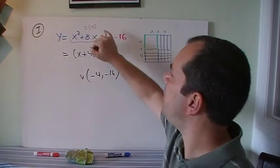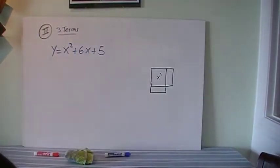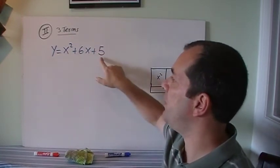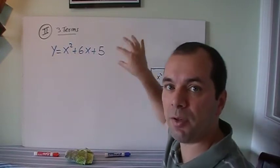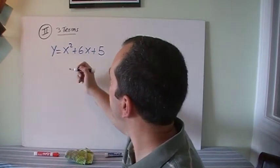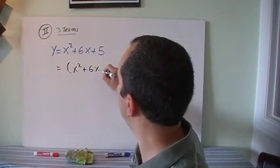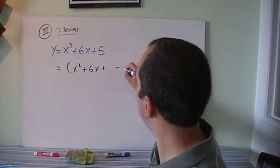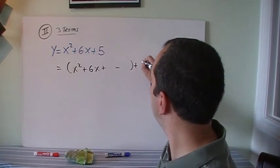The second case is when we have a constant term — for example, x squared plus 6x plus 5. That's not going to make a perfect square as-is, because I need to put 3 on the side, 3 on the bottom, and add 9 to make a full 3 by 3 square. So what we do is add brackets around x squared plus 6x, then add and subtract the needed number inside, leaving the plus 5 outside. That last number I never touch until the very end.